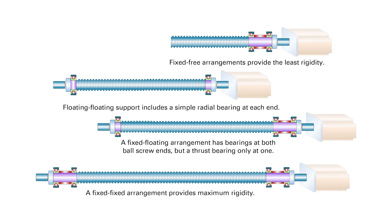So if a ball screw assembly isn't sufficiently rigid for an application, that is, if it experiences too much axial deflection, one of the first criteria to consider changing is the end bearing arrangement.